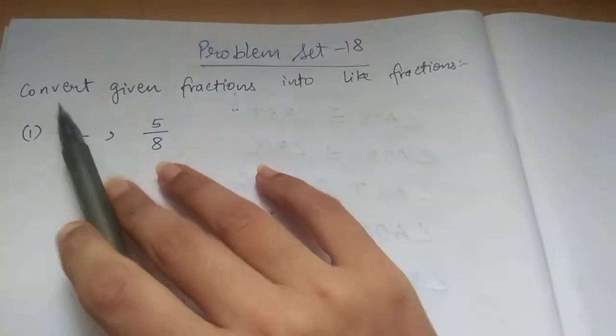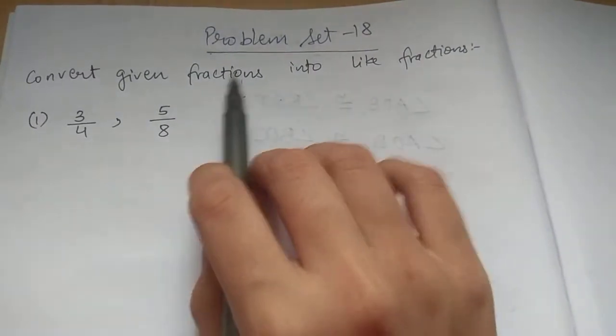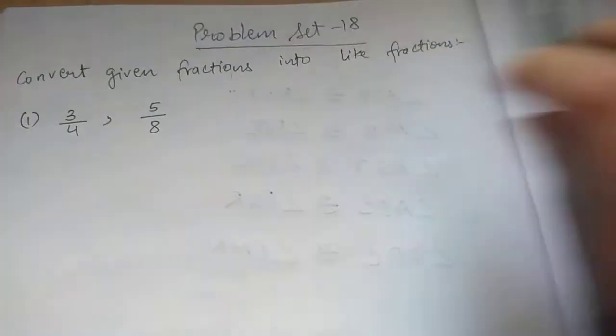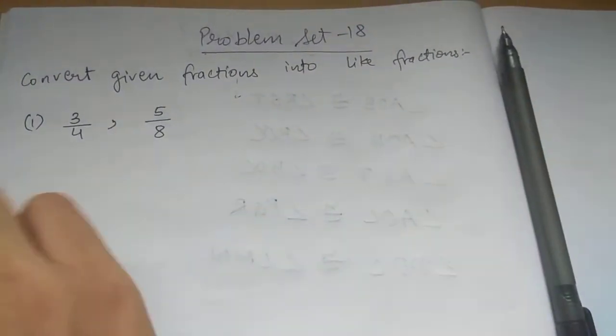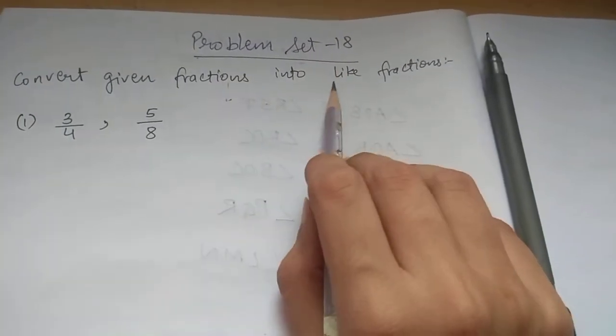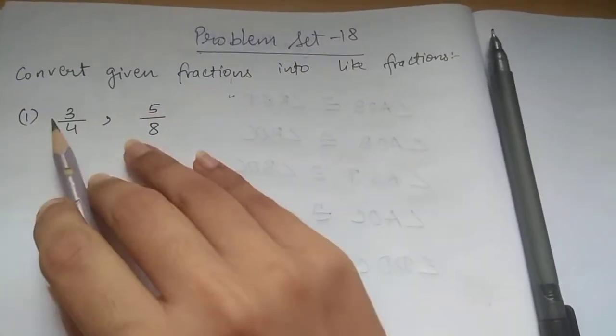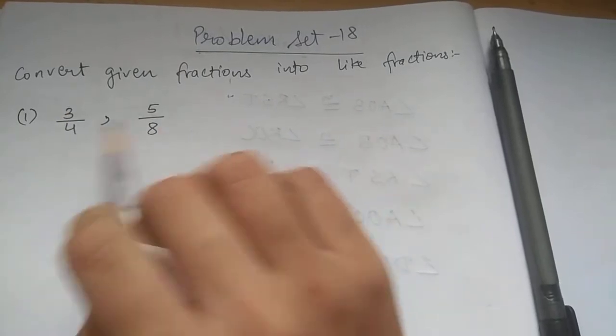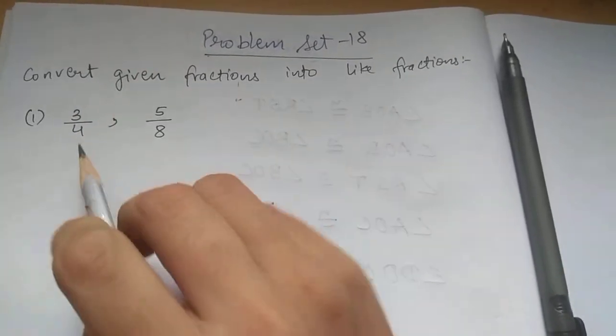Problem set 18: Convert the given fractions into like fractions. Now we have already seen how to convert unlike fractions into like fractions. First of all, like fractions are those wherein the denominators are same, so we have to make denominators same.